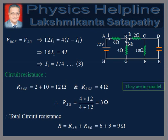Now let us determine the total circuit resistance. Resistance of the arm BCF is equal to 2 plus 10, which is equal to 12 ohms. Resistance of the arm BGF is equal to 4 ohms. These two are in parallel, so the net resistance between B and G is equal to (4 × 12) divided by (4 + 12), which is equal to 3 ohms.